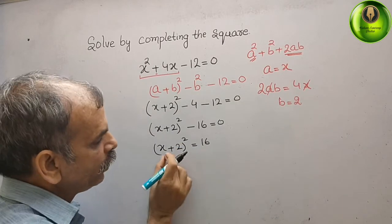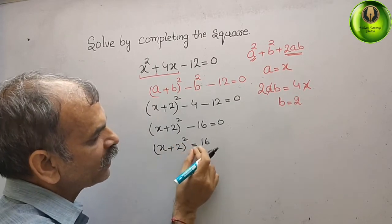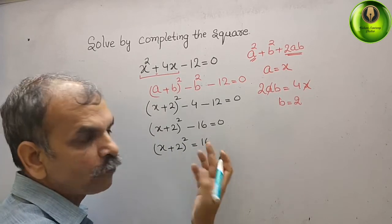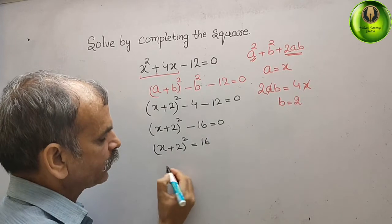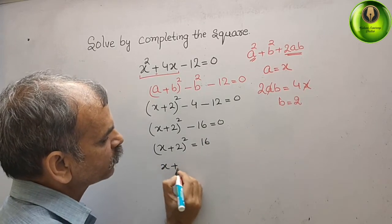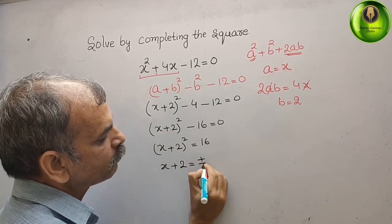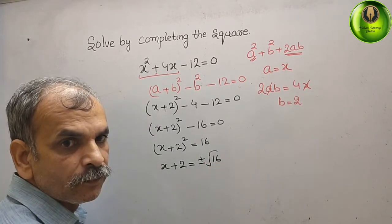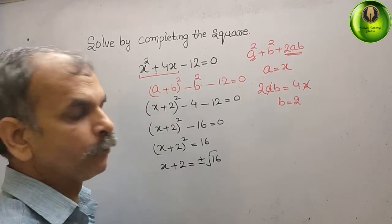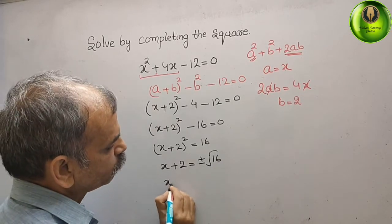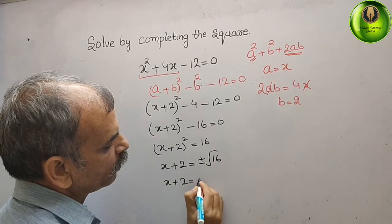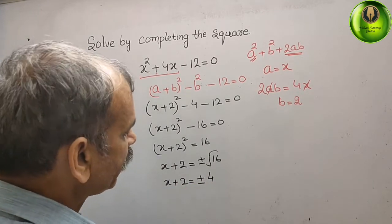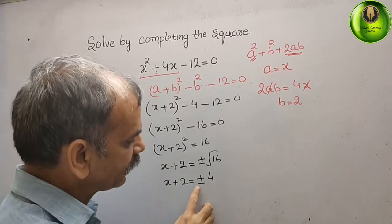If (x plus 2) whole square is 16, then x plus 2 equals root over 16. So we write x plus 2 is equal to plus or minus the square root of 16. The square root of 16 is 4, so x plus 2 is equal to plus or minus 4.